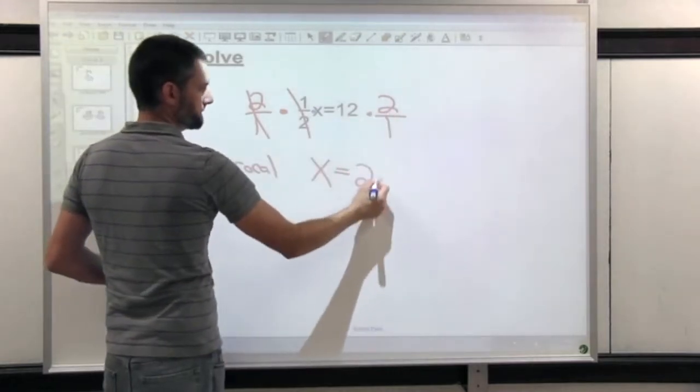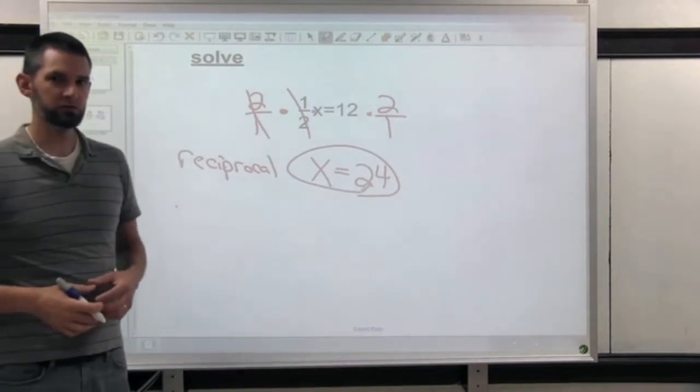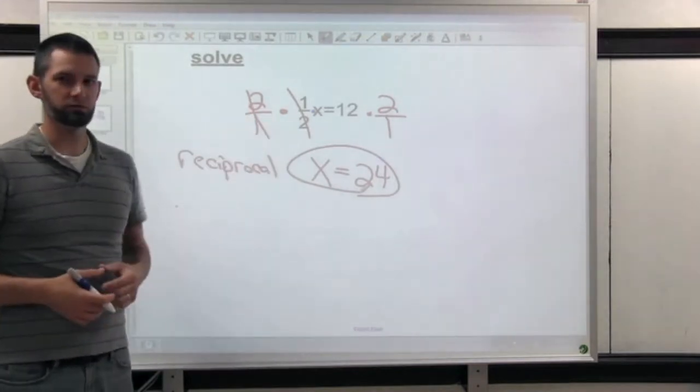Twelve times two, twenty-four. If you have a fraction, sometimes it's easier to multiply by the reciprocal.